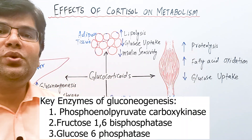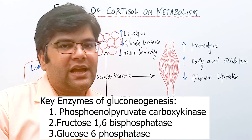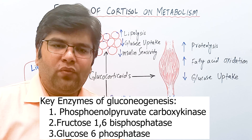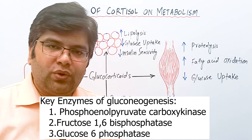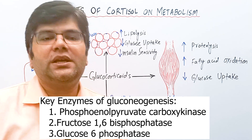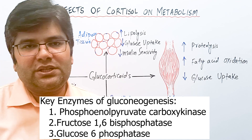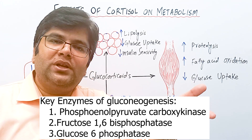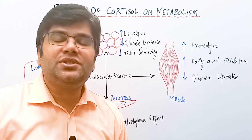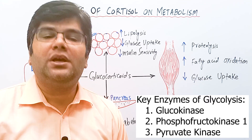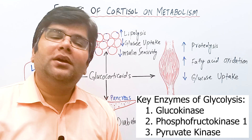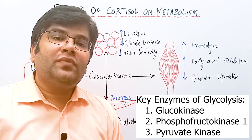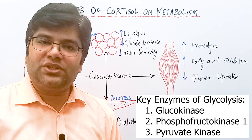In the liver, cortisol induces the key enzymes of gluconeogenesis: phosphoenolpyruvate carboxykinase, fructose-1,6-bisphosphatase, and glucose-6-phosphatase. Cortisol also indirectly inhibits the key enzymes of glycolysis — glucokinase, phosphofructokinase, and pyruvate kinase — so that the oxidation of glucose is decreased.